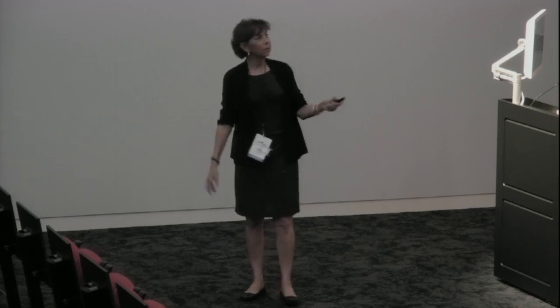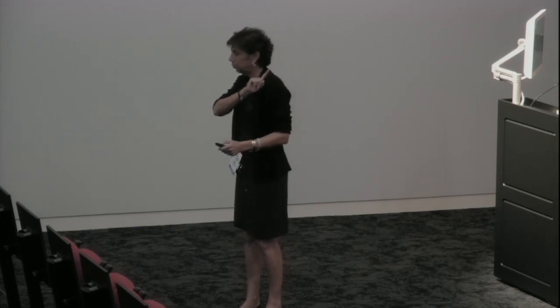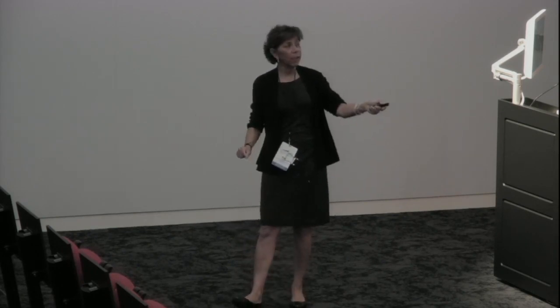We can increase pH in a number of different ways. This experiment shows emerald tau — tau tagged with a green fluorescent protein — decorating microtubules. We start out at a neutral pH, raise it, and then go right back to neutral pH.